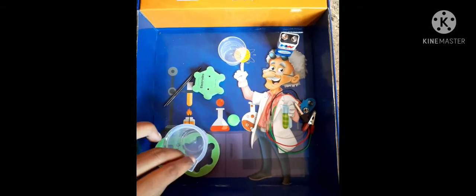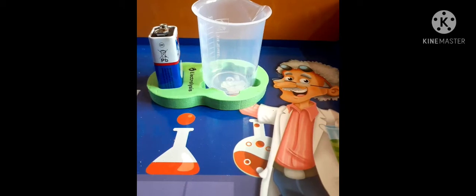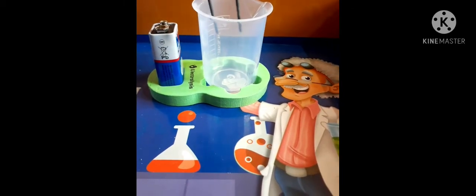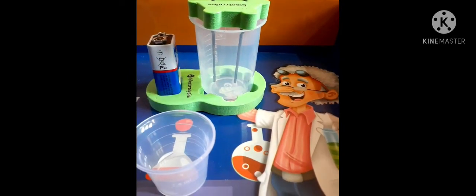While assembling it, you need to assemble it like this and put the graphite rods over it like this. Now what you need to do is take this beaker and put salt in it along with some water.